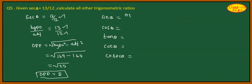Sin theta formula: opposite side by hypotenuse. So, opposite side is 5 and hypotenuse is 13. Therefore, sin theta equals 5 by 13.